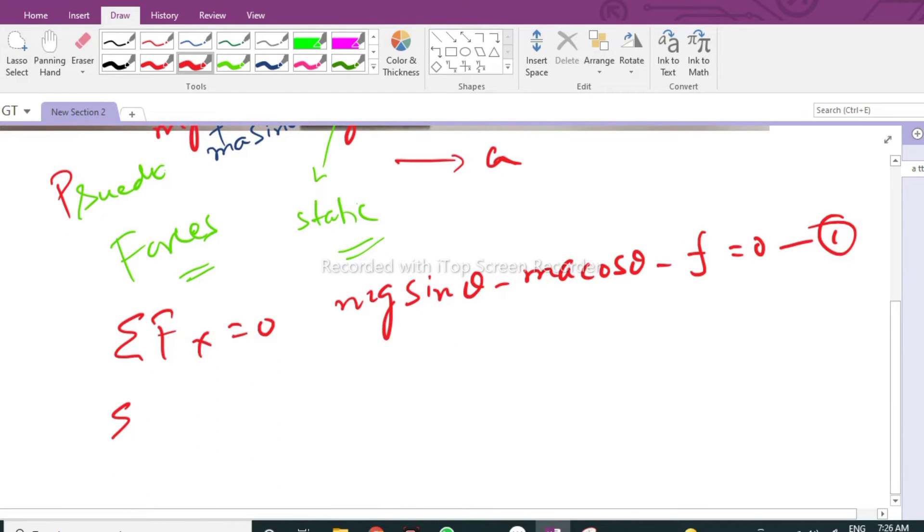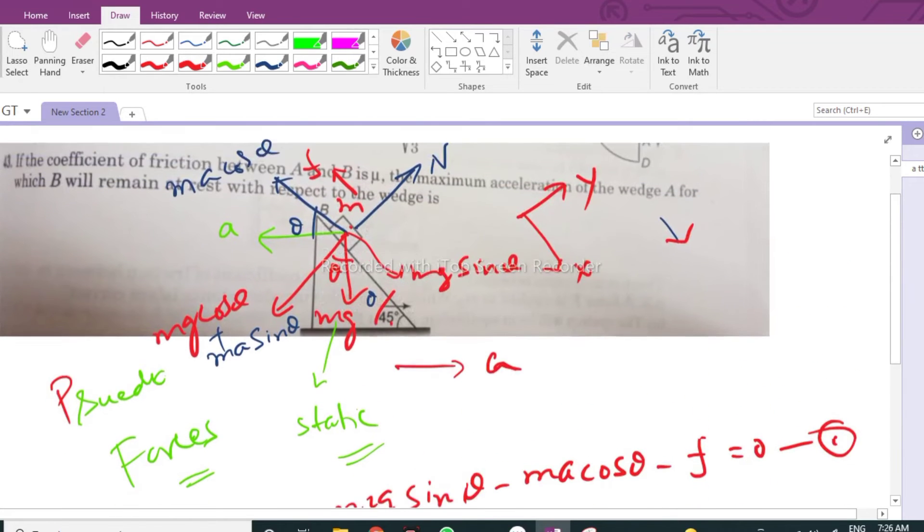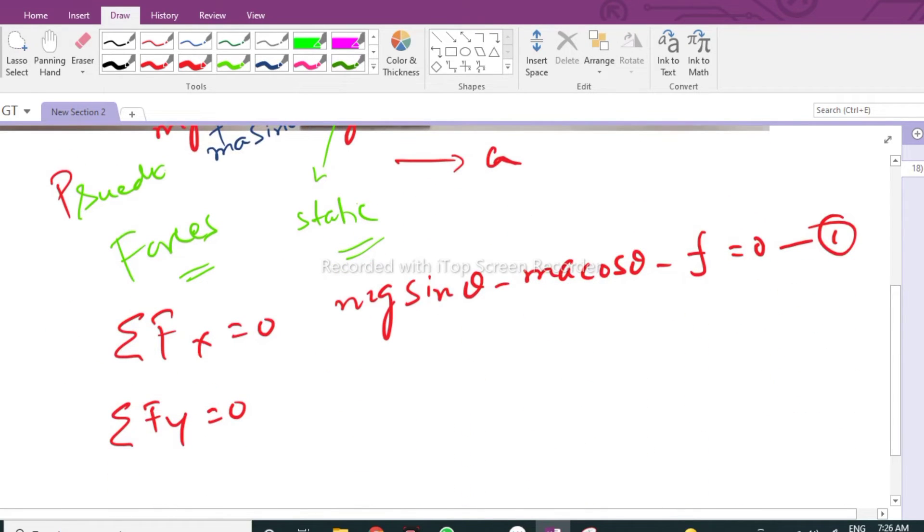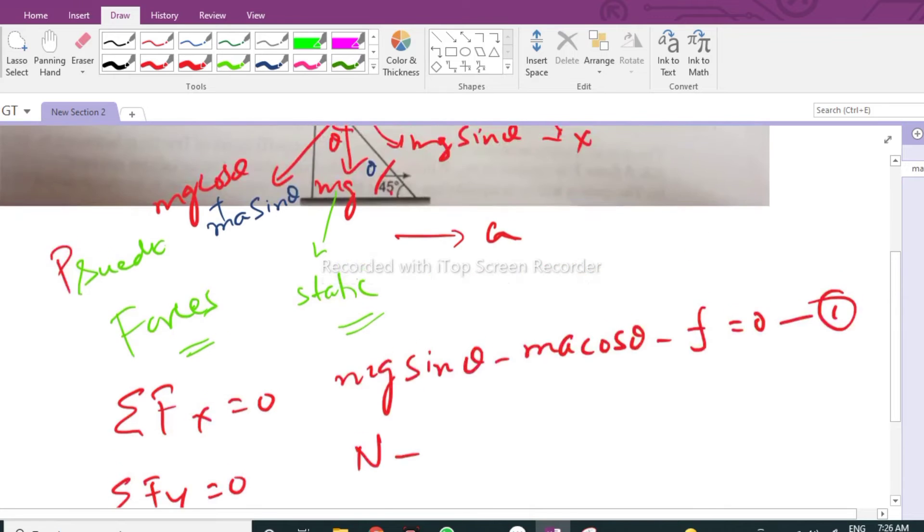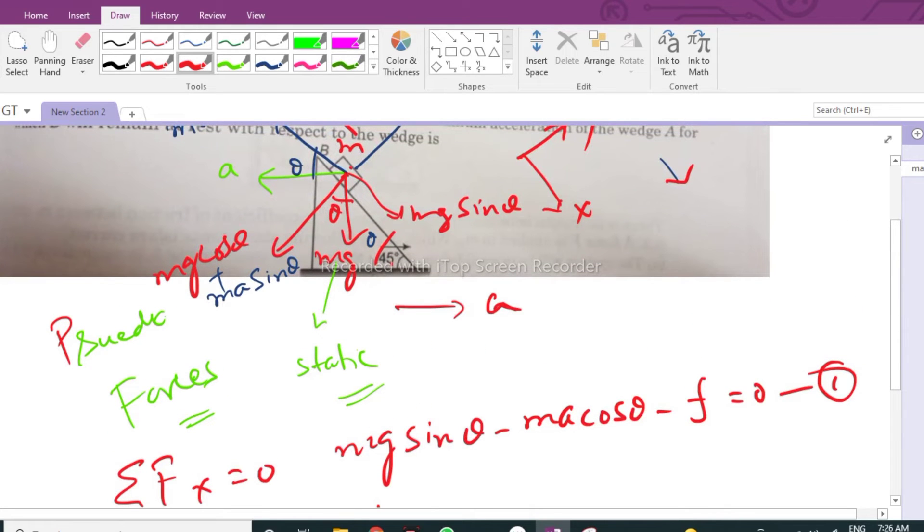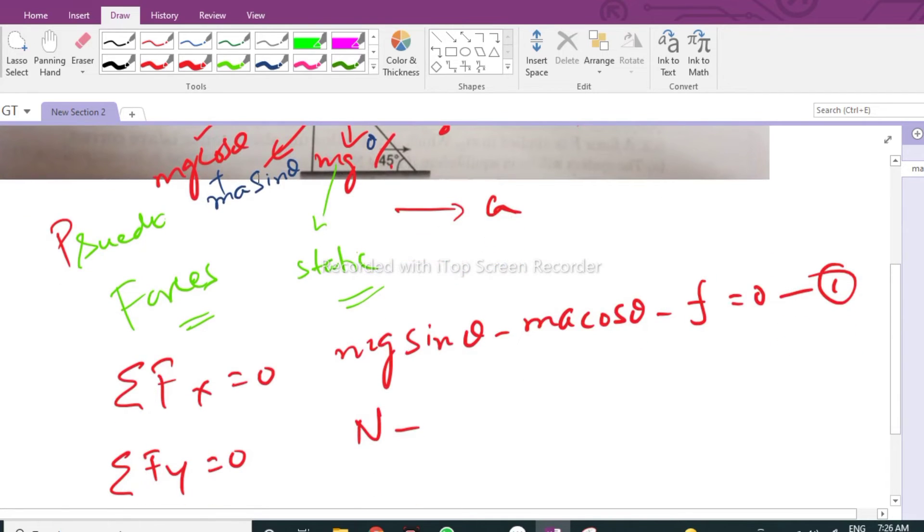Now in the other direction, sigma Fy equals zero. If I take upward as positive, then it is N minus—we have to take these two forces now—so mg cosine theta.